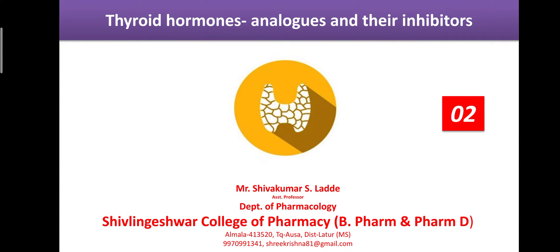Today our topic is pharmacology of thyroid hormone analogs and their inhibitors. Analogs are drugs that have similar pharmacological action to physiological thyroid hormones T3 and T4. These drugs are mainly used when the thyroid gland does not produce thyroid hormones or the concentration is negligible. Inhibitors are used to control the over-activity of T3 and T4.